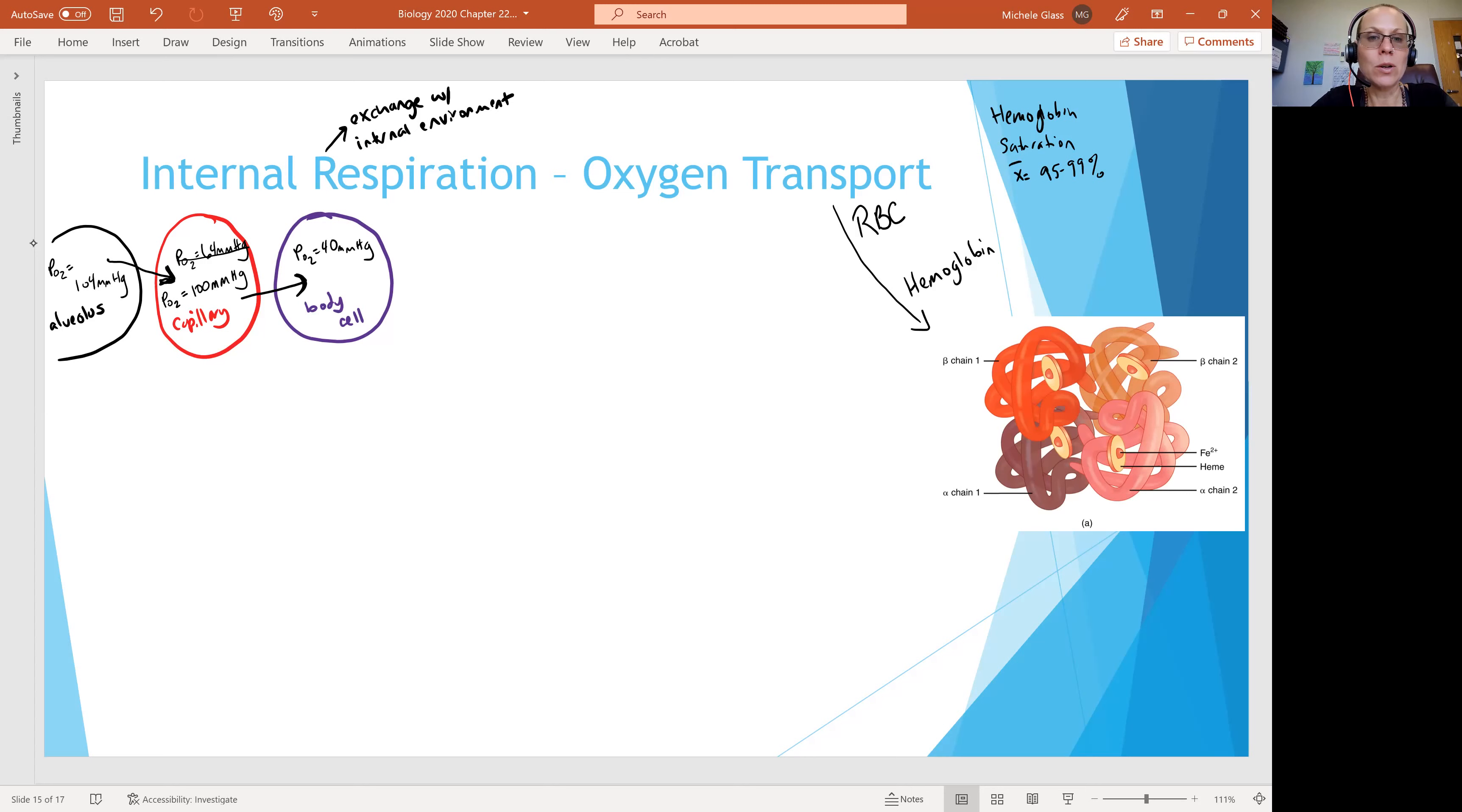I have here a picture of hemoglobin from our OpenStax textbook. Remember your hemoglobin is a globular protein. It's made up of four amino acid subunits. At the center of each of the subunits, you have a heme and at the center of each heme, you have an iron group. And so that's what that diagram is reminding us of.